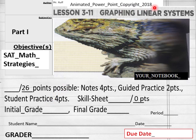3.11, graphing linear systems, part 1 here. We got 26 points of the note-taking. We got a skill sheet. We don't have a skill sheet on this lesson, a specific lesson.